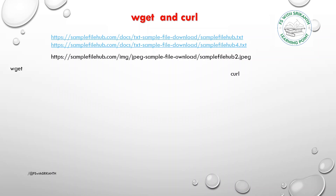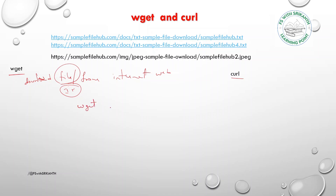The wget command is a command line utility for downloading files from the internet. Not only wget, curl also downloads files from the internet — any JPG image or any data you can get from the web. The basic syntax is: wget [url]. This downloads a single file and saves it with the original filename from the URL.